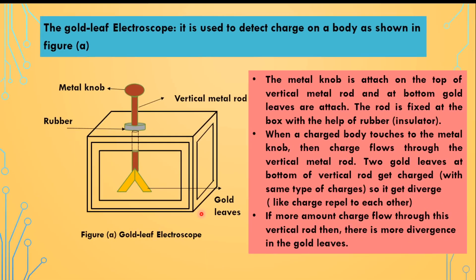Now we are going to discuss a very important experiment: the Gold Leaf Electroscope. This is a device by which we can detect the charge on a body. By using this experiment, we observe and detect the charge on a body.